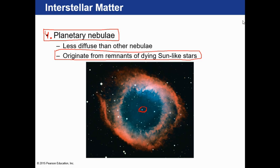One other type of nebula is called a planetary nebula—this is kind of a misnomer. Scientists used to think these were the beginnings of a solar system forming, but we now know this is actually a star that has exploded, with its outer layers shed off into space. This is probably what's going to happen to the sun in about five billion years, and if we're still around at that time, it's not going to be pretty.